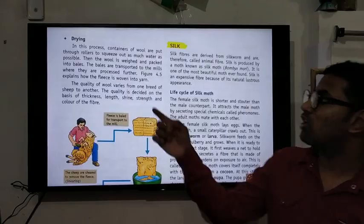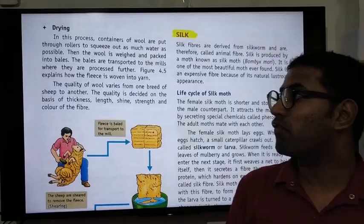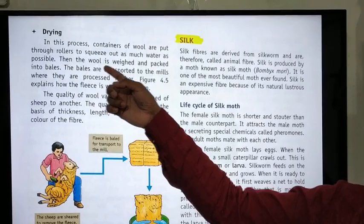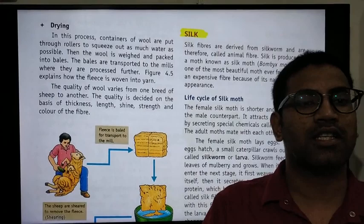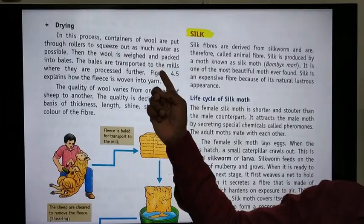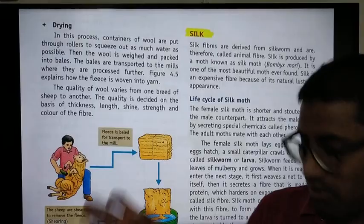After dyeing comes drying. The containers of wool are put through rollers to squeeze out as much water as possible, removing moisture. Then the wool is packed into bales — for example, 50 kg or 200 kg bales — which are then transported to mills where they are processed further.